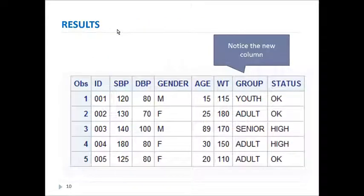OK, this is what you should have gotten if you entered the code correctly. If you don't get this answer, go back and try again. But notice the new column here called group, and you'll see it has youth, adult, and seniors in it based on the criteria in the if statement.